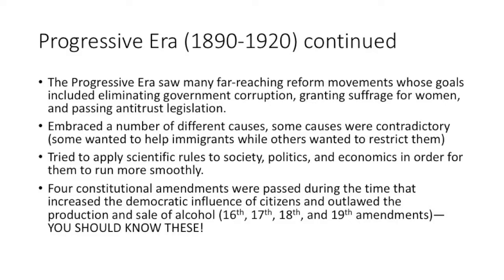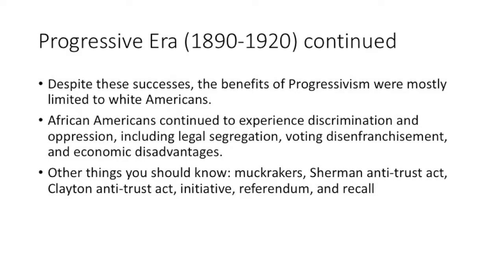There were failures and limitations of the progressives. They generally didn't do much for people of color — most benefits were limited to white Americans. Jim Crow laws were still around; Plessy v. Ferguson falls in this time period. The separation of the races continued. Tools like initiative, referendum, and recall were used to get Americans more involved in democracy, but racial inequality persisted.